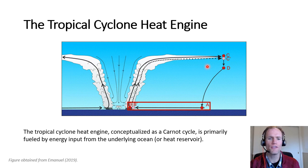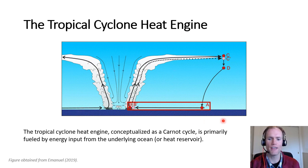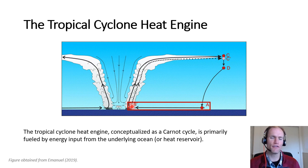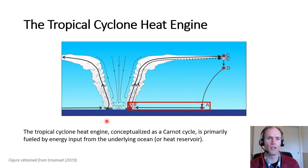As we recall from our previous video series, we can conceptualize the tropical cyclone as a heat engine or Carnot cycle from thermodynamics. We have a heat reservoir given by the underlying ocean, from which the tropical cyclone gains heat energy along the inflow leg from A to B, as air spirals inward toward the center. It gains heat in the form of enthalpy — or equivalently, entropy, moist static energy, equivalent potential temperature — gaining temperature and moisture from the underlying ocean.